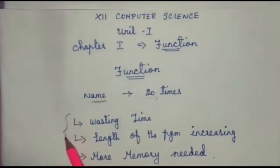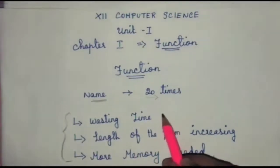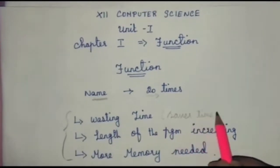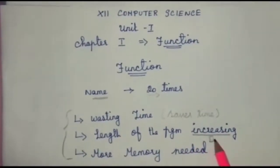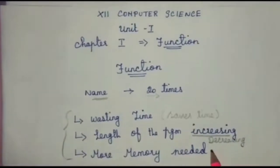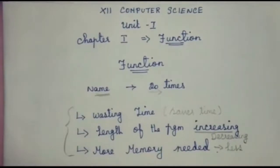To avoid these difficulties, you can create one function and that function will print your name 20 times. You just make a call to that function. If you do this, it will save your time, the length of the program will be decreasing, and you need only less memory space. For that purpose only we are using functions. This is the main concept of the function.